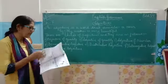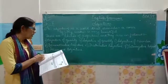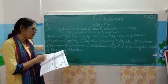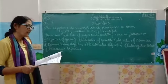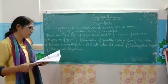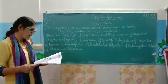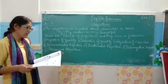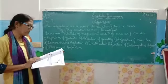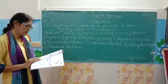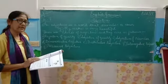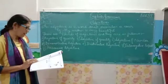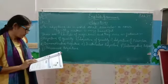Adjective of number answers the question 'how many.' Example: these mangoes are a star. Demonstrative adjectives answer the question 'which.' Example: neither team won the match.